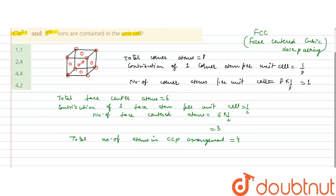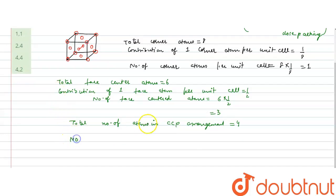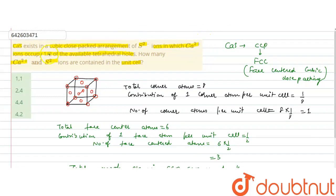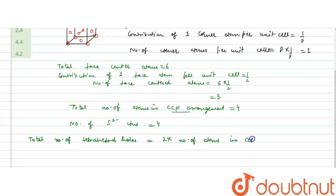Since the sulfide ions are in the cubic close-packed arrangement, the number of S²⁻ ions per unit cell is 4. Now we calculate the number of Ca²⁺ ions, which occupy half of the available tetrahedral holes. The total number of tetrahedral holes equals two times the total number of atoms in the arrangement: 2 × 4 = 8. So total number of tetrahedral holes is 8.